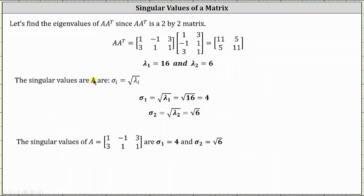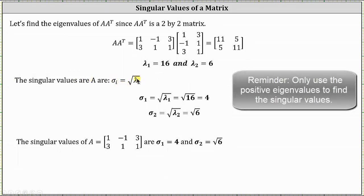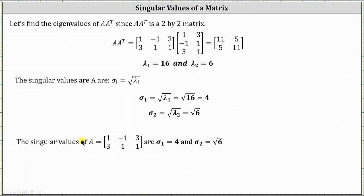The singular values of A are sigma sub i equal to the square root of lambda sub i. For lambda sub one equals 16, sigma sub one equals the square root of 16, which is equal to 4. And sigma sub two equals the square root of lambda sub two, which is equal to the square root of 6. Therefore, the singular values of the given matrix A are sigma sub one equals 4 and sigma sub two equals the square root of 6.